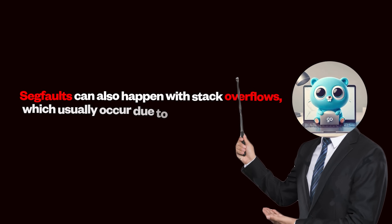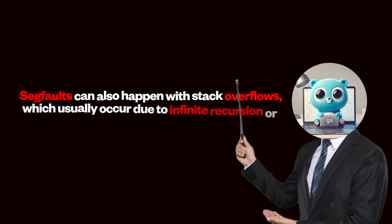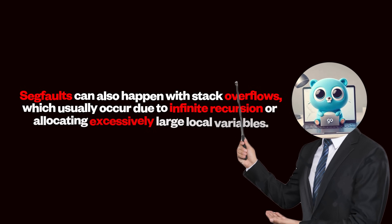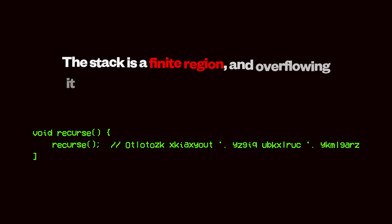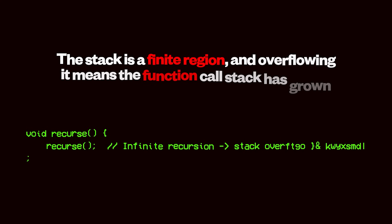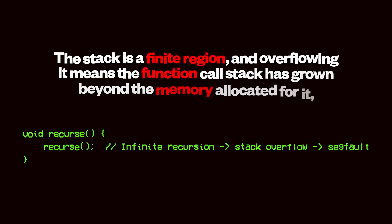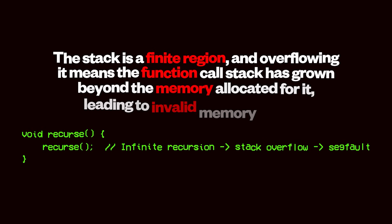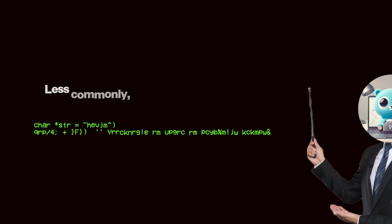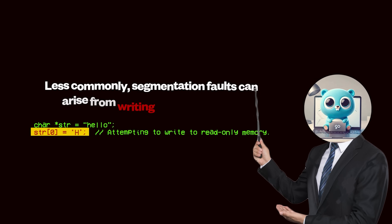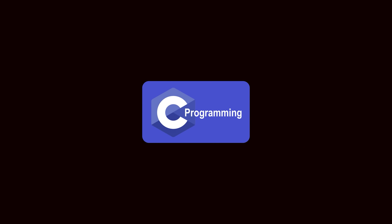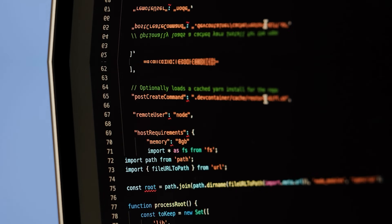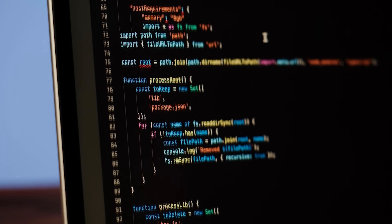Segfaults can also happen with stack overflows, which usually occur due to infinite recursion or allocating excessively large local variables. The stack is a finite region, typically 4KB, and overflowing it means the function call stack has grown beyond the memory allocated for it, leading to invalid memory access. Less commonly, segmentation faults can arise from writing to string literals. In C, string literals are stored in read-only memory, so modifying them leads to a crash.